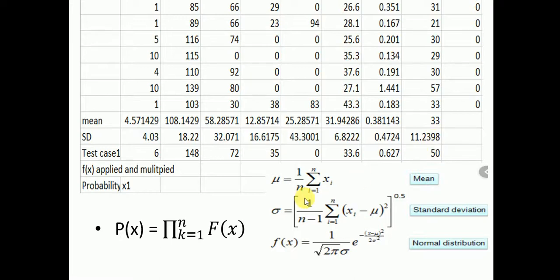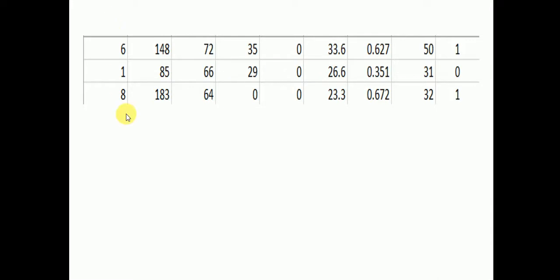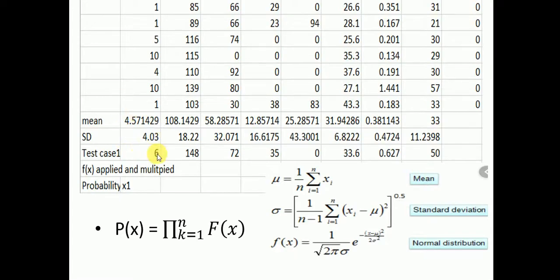Now for the test case: there are three test cases as input. We take the first row and calculate using the x value. The value 6 is substituted into the formula, and mu and sigma (rho) are already known — mu comes from the training data and x is the test input value of 6. Next values are 148, 172, 35, and so on.